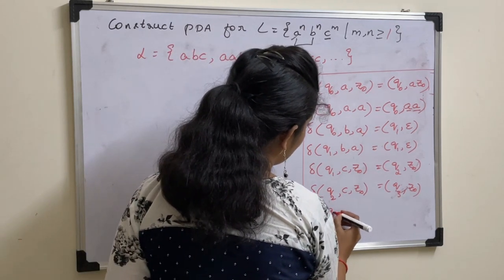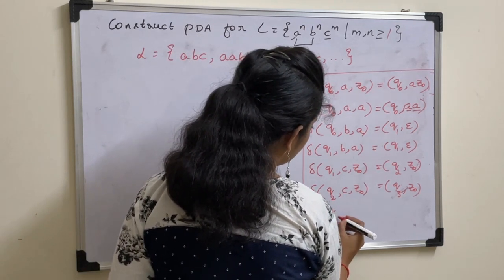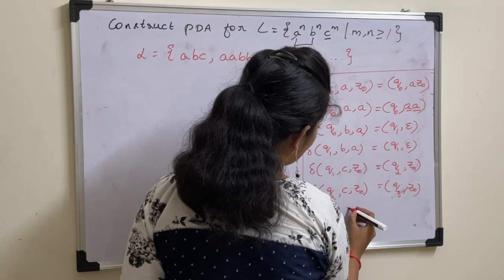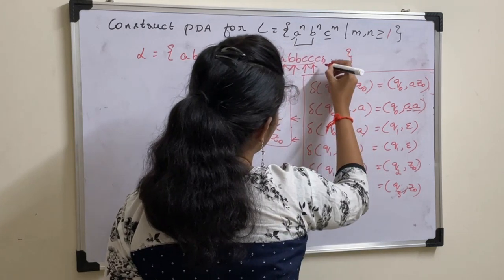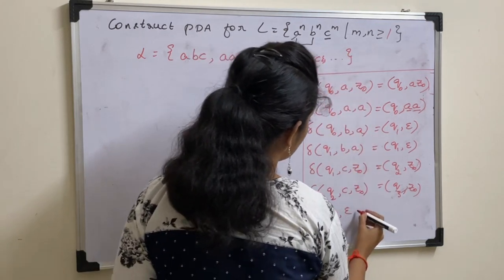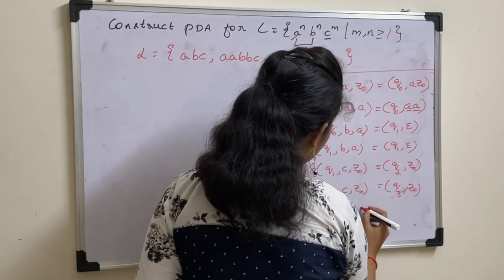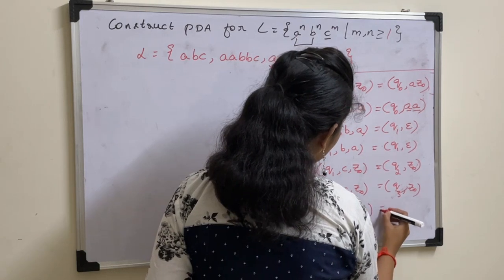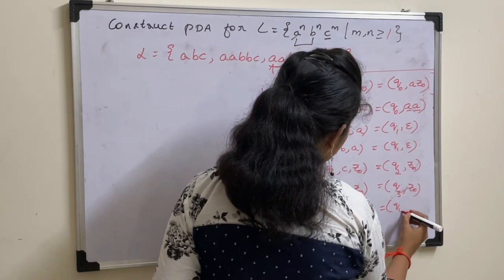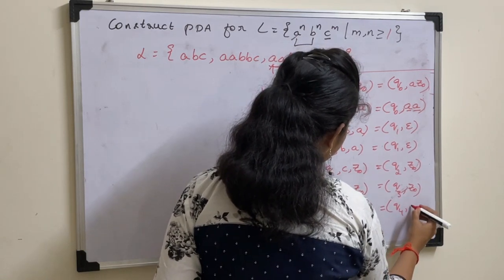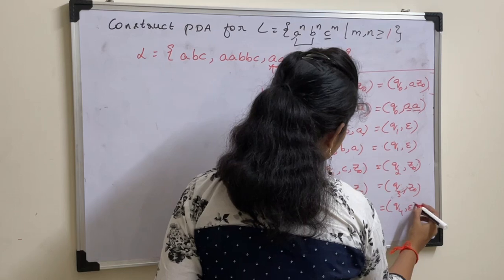Finally, delta of (Q3, epsilon, Z naught): at the end, place epsilon. When the input is epsilon and the top of the stack is Z naught, it gives (Q4, epsilon).